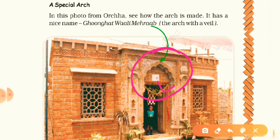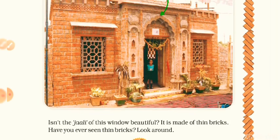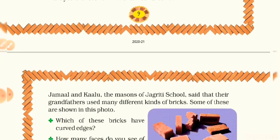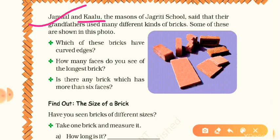Isn't the jali of this window beautiful? You can see it is made of thin bricks. Have you ever seen thin bricks? You may have seen thin bricks used to make jali and jharokha patterns. Now Jamal and Kalu — the two masons who built Jagriti's school — said that their grandfathers used many different kinds of bricks, some of which are shown in this photo.